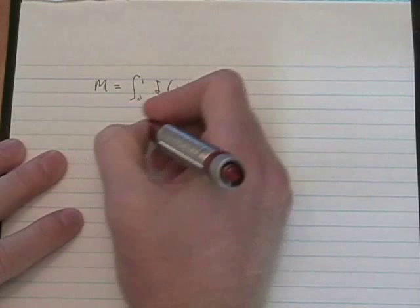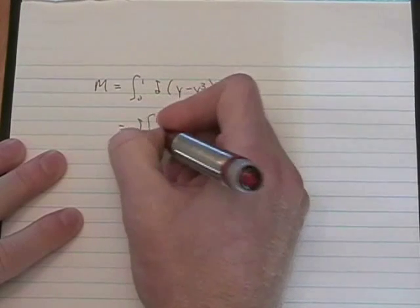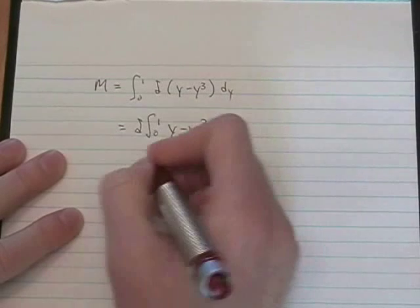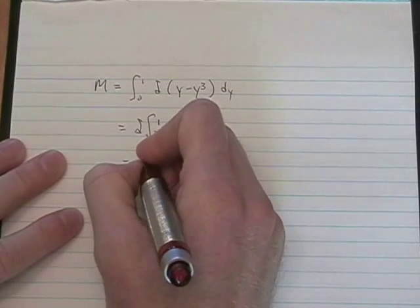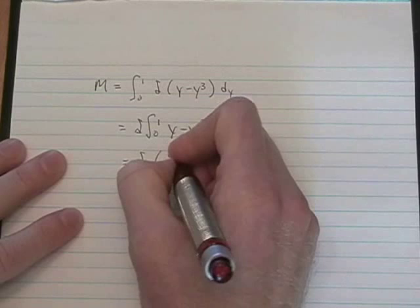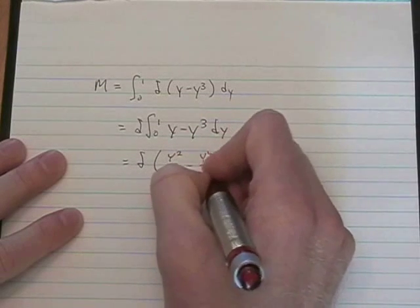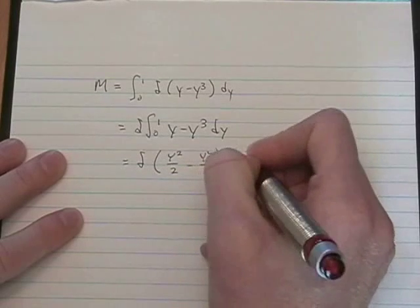Delta is a constant, we factor it out. This is an easy antiderivative, we use a power rule. y squared over 2 minus y to the fourth over 4. We're still integrating from 0 to 1.